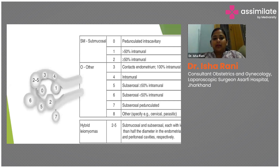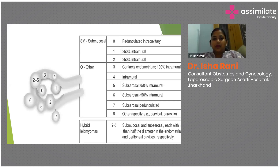This is the FIGO classification of fibroids, numbered from 0 to 8, created for uniform reporting. Type 0 is a pedunculated submucosal fibroid. Types 1 and 2 are submucosal: type 1 has more than 50% inside the cavity, type 2 has less than 50% inside the cavity. Fibroid mapping is very important in defining the myoma as it determines the treatment modality.